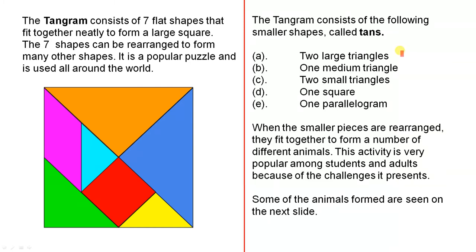Two large triangles, there and there. One medium triangle, the green one. Two small triangles, the light blue one and the yellow one. One square, the red one. And one parallelogram, this pink one.